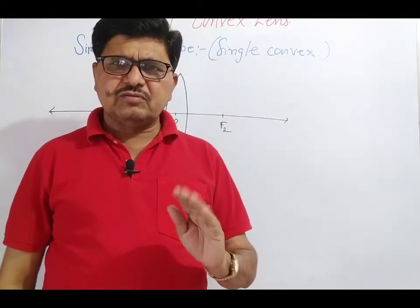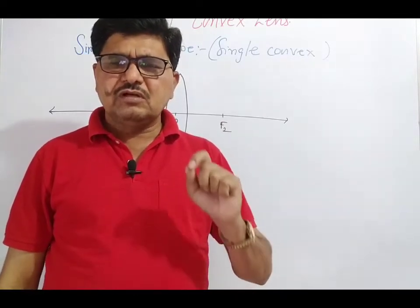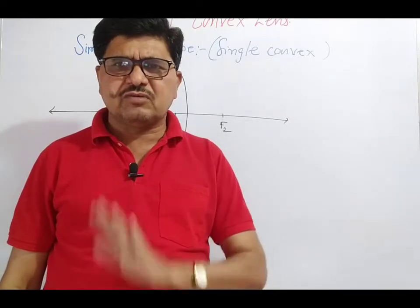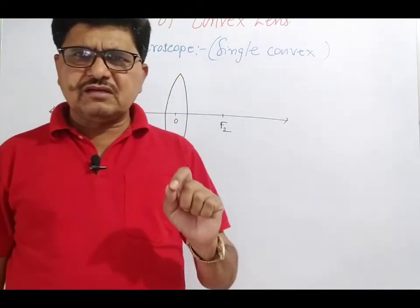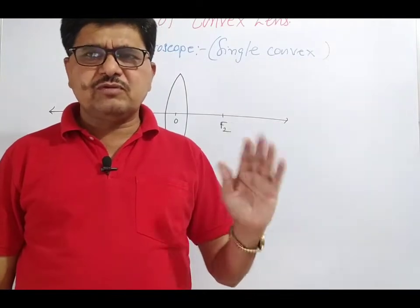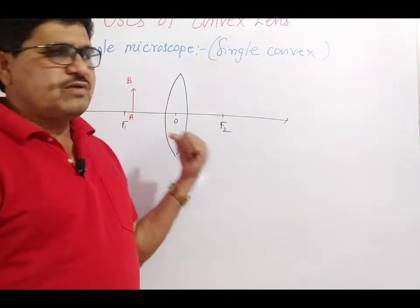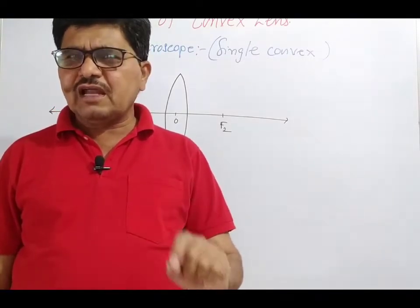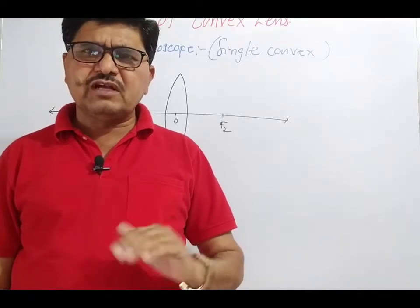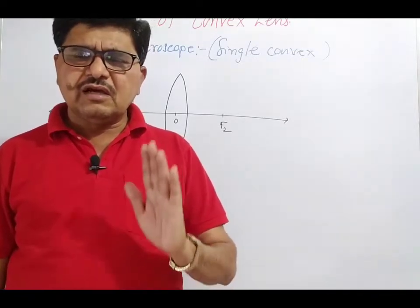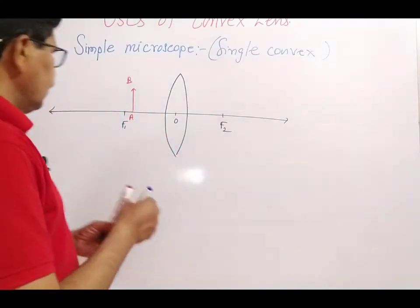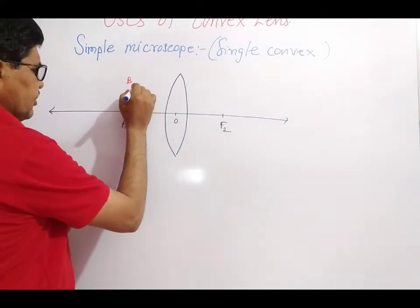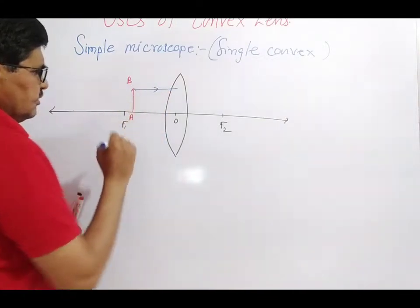The nature of the image is virtual and erected, and the size of the image is magnified. You can produce a magnified image more than 20 times the size of the object, and it is at the same side of the object. If the object is placed between the optical center and focus — that is, within the focal length — at this time you can consider two rays originated from point B.